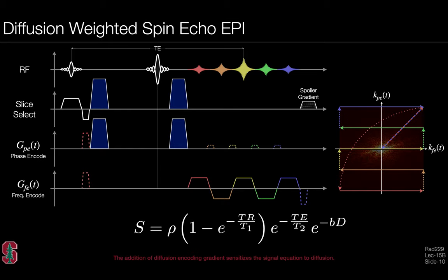Diffusion gradients can be applied on any axis—x, y, z, the readout axis, or any linear combination of the three. For diffusion tensor experiments, it is important to design different linear combinations to sample diffusion along different directions: gradients on the slice-select axis sample diffusion in that direction, gradients on the phase-encode axis sample diffusion there, and linear combinations sample diagonal directions. Exploring these directions further is the topic of the next lecture.